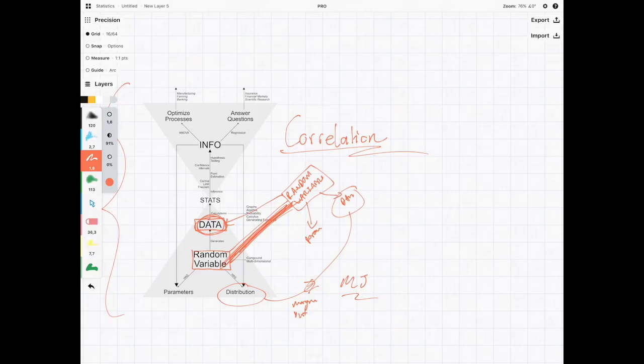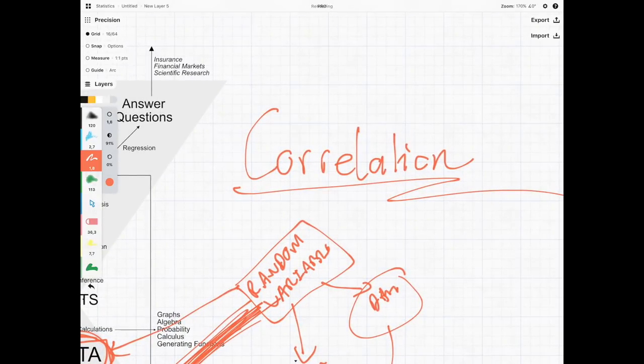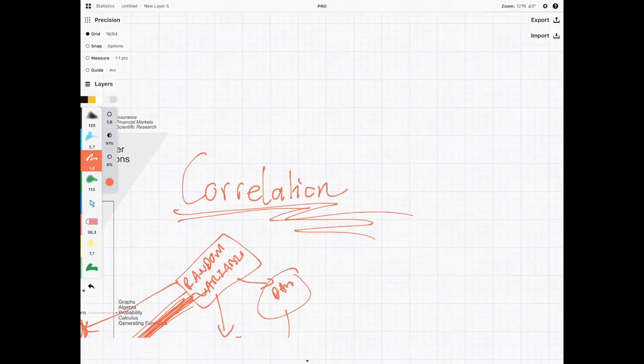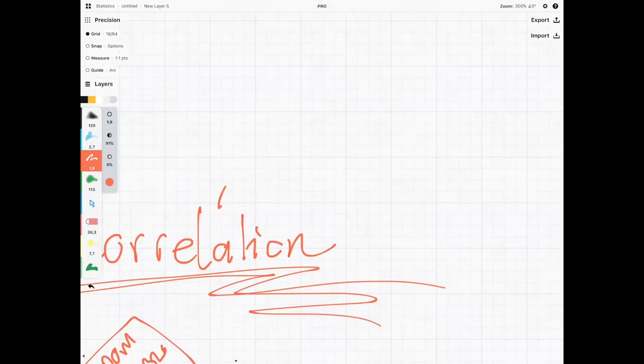One thing that many people sometimes make a mistake in is that they think correlation causes causation. The classic example with correlation not being causation is they found that the length of someone's arms and their IQ or their math ability were linked.